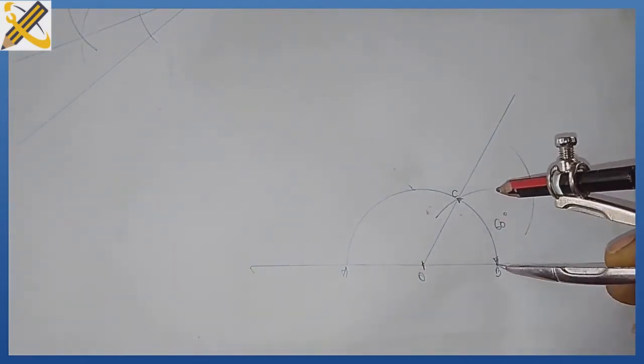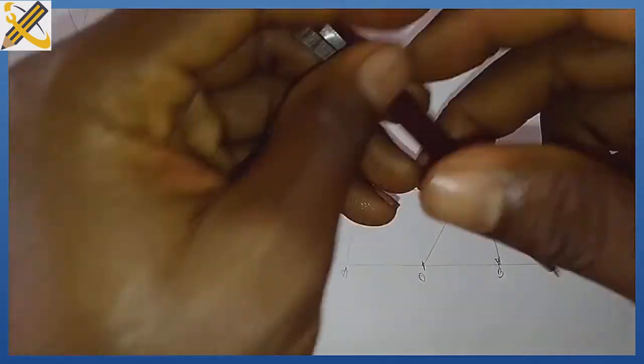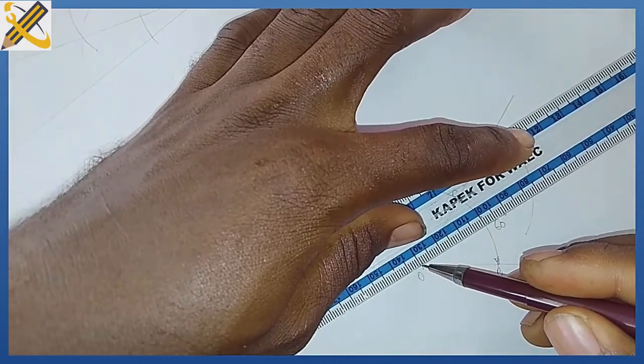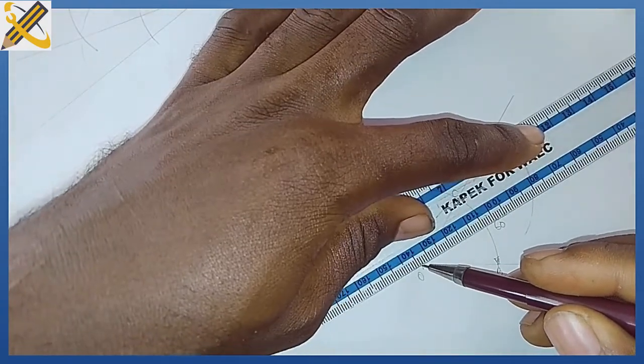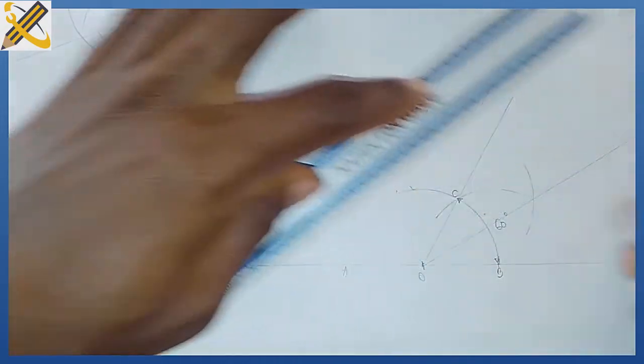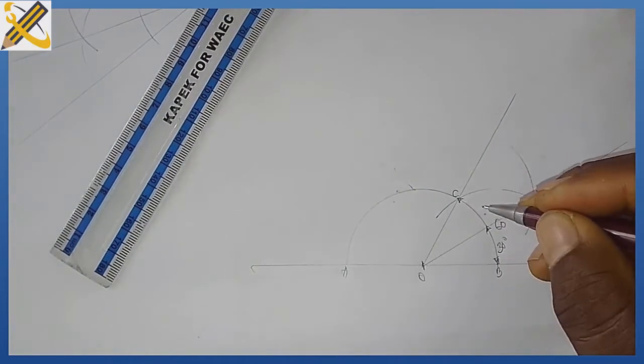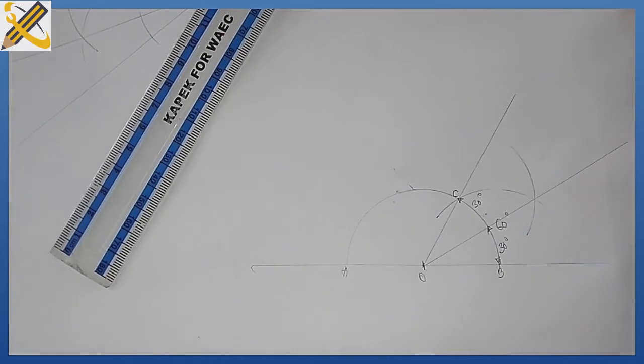Having done that, I'm going to draw through the point of intersection from point O. The angle from here down here is 30 degrees, and from here to here is 30 degrees.